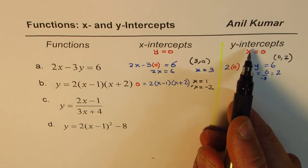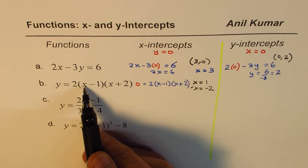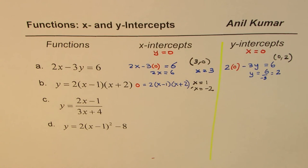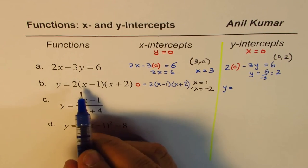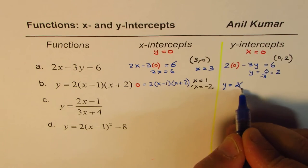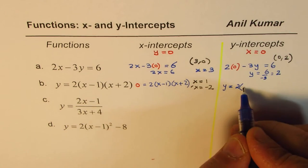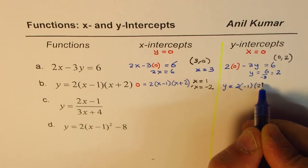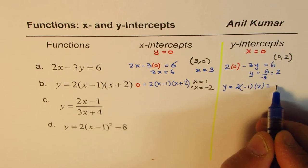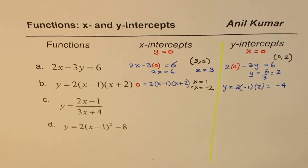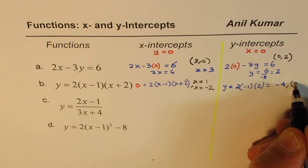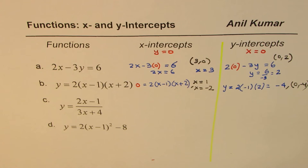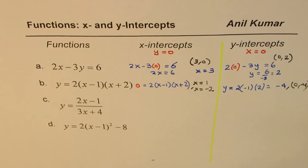To find the y-intercept, substitute x equals 0. I get y equals 2 times (0 minus 1) times (0 plus 2), which is 2 times (minus 1) times 2, giving minus 4. So y equals minus 4 is the y-intercept, which can be written as the point (0, minus 4).